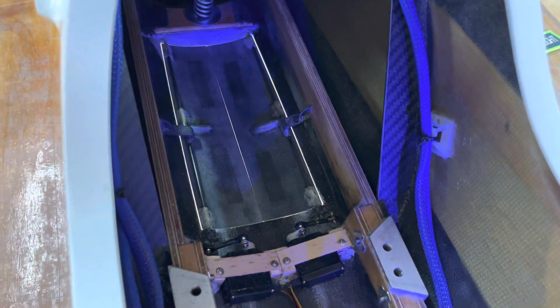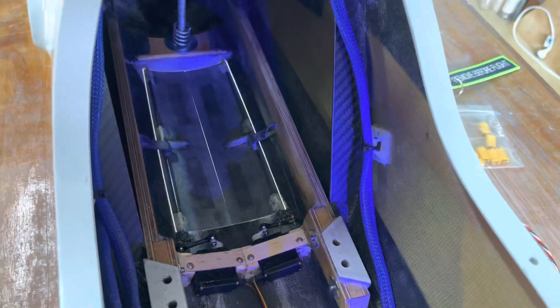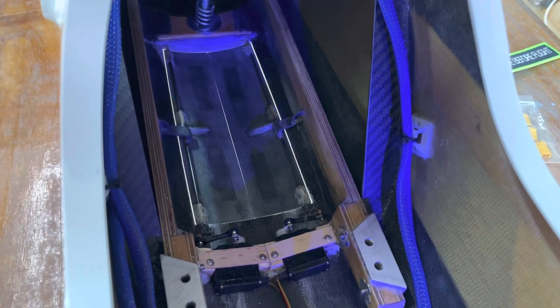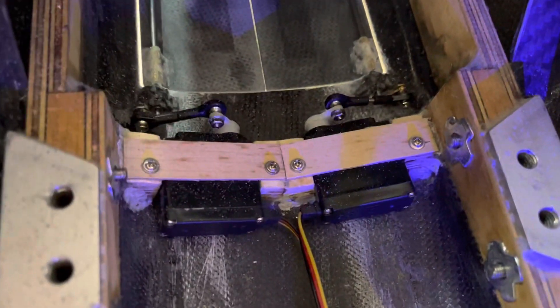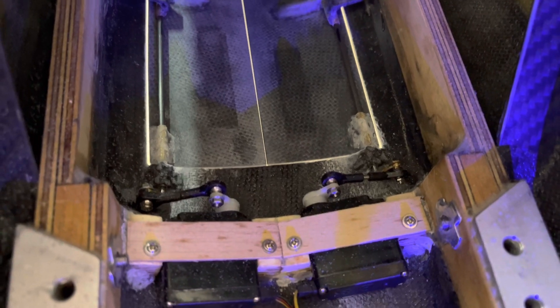Okay, so just got a short video here before I put the retract assembly back in place, just to show how the gear doors are operating. Got the two servos down here, one driving each door. The torque rod is actually the hinge as well, so it's a dual-purpose type thing.